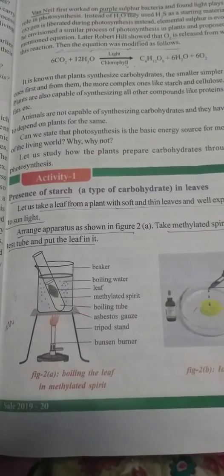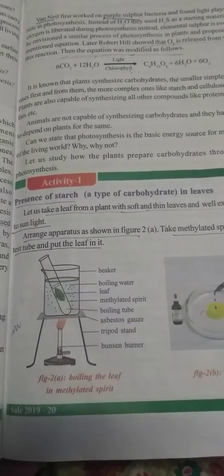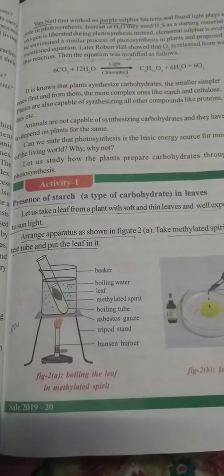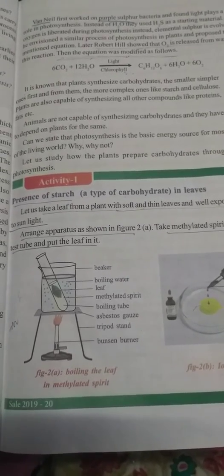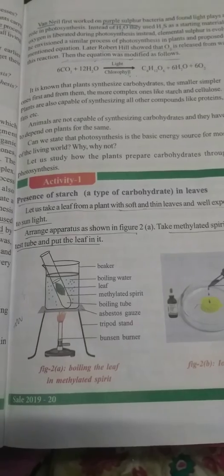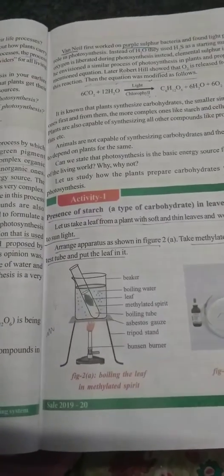The aim of this experiment is to check the presence of starch in leaves. What is starch? Starch is a type of carbohydrate. As we know, plants contain carbohydrates and they are able to break down carbohydrates. So the aim of the first experiment is to check the presence of starch in leaves.